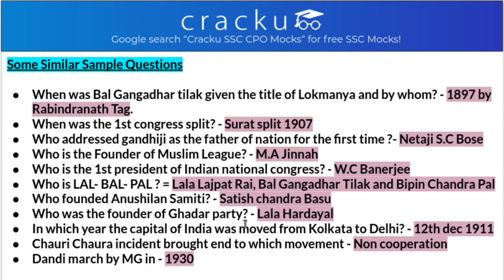Who was the founder of the Ghadar Party? The founder of the Ghadar Party is Lala Hardayal. In which year was the capital of India moved from Kolkata to Delhi? It was moved in the year 1911, on 12th December — earlier it was Kolkata, then moved to Delhi. The Chauri Chaura incident brought an end to which movement? Chauri Chaura was a violent incident in which 22 policemen were set on fire. Due to this, Gandhi ji was disheartened and called off the Non-Cooperation Movement in 1922.